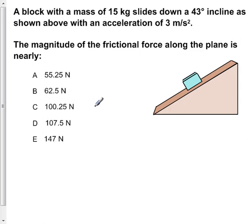A block with a mass of 15 kilograms slides down a 43-degree incline as shown above with an acceleration of 3 meters per second squared. The magnitude of the frictional force along the plane is nearly what?